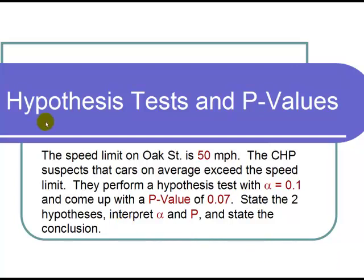This is a video on hypothesis tests and p-values. The question states the speed limit on Oak Street is 50 miles per hour. The California Highway Patrol suspects that cars on average exceed the speed limit.